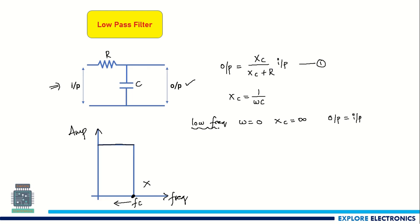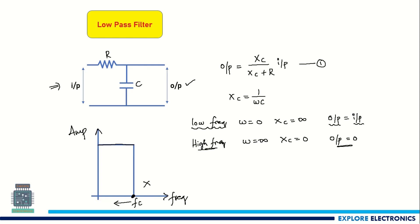For all the low-frequency signals, the low-pass filter output will be the same as the input. For high-frequency components, ω equals infinity, so Xc becomes 0. In the output expression, if Xc equals 0, the output will be equal to 0. So for high-frequency signals, the low-pass filter output will be 0.